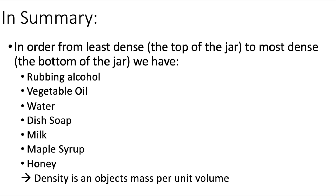In summary, in order from least dense at the top to most dense at the bottom, we have: rubbing alcohol, vegetable oil, water, dish soap, milk, maple syrup, and honey. As explained, density is an object's mass per unit volume. Thank you for watching this video — I encourage you to try this at home with parent supervision. Please like and subscribe on YouTube and follow us on Facebook and TikTok. Until next time.